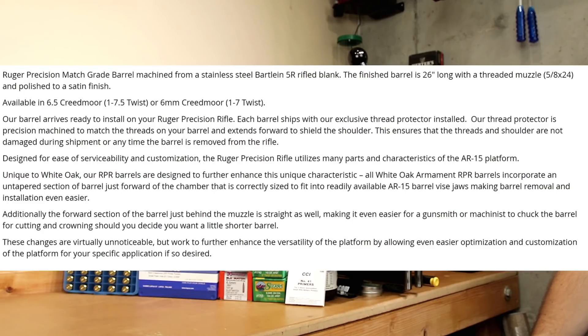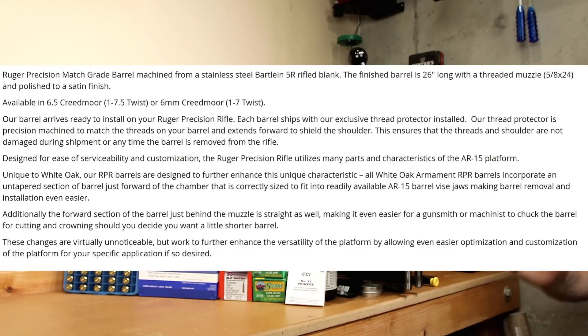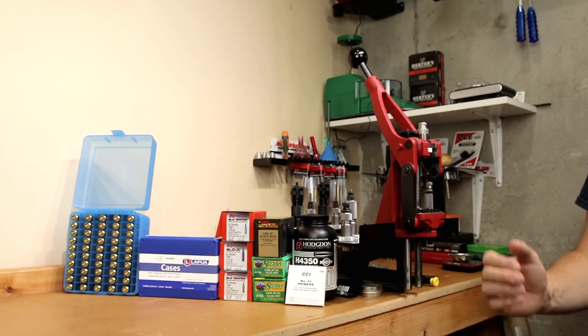If you were to choose this particular barrel from White Oak Precision with the Bartland Blank, I believe the only option for 6.5 Creedmoor is the 1-7.5 twist, though you're certainly going to find out more from them than you are from me. But that's the barrel that we're going to be going over today and talking about its break-in procedure.